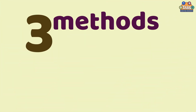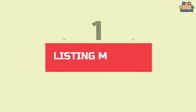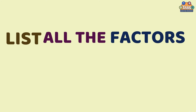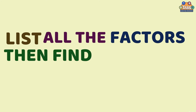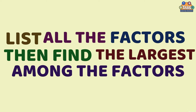There are three methods to get the GCF. The first is through the listing method. In the listing method, all you need to do is to list all the factors of the numbers, then find the largest among the factors.